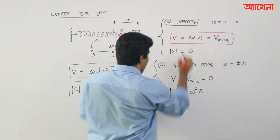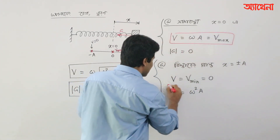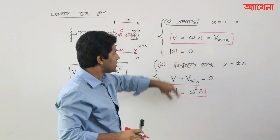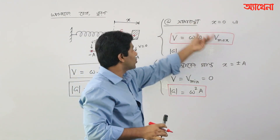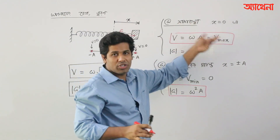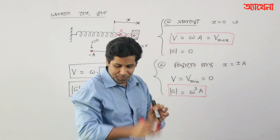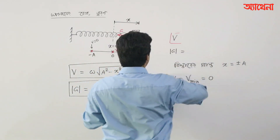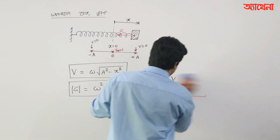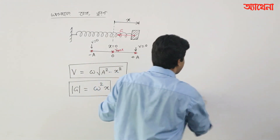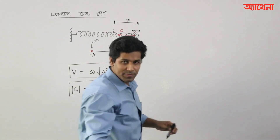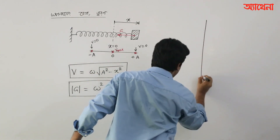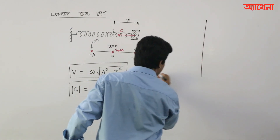The maximum is omega times A. So, you can see the question in this particular example. How much is the answer? The answer is the same. Now, we have to look at the graph of this particular problem. First, we have to look at the graph. The graph is variable. We have to look at the same x.